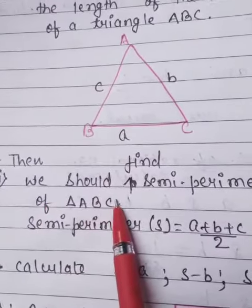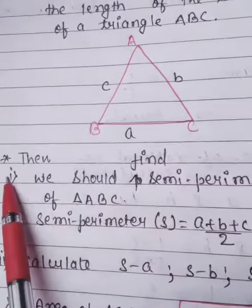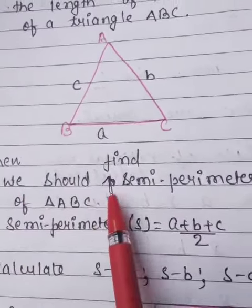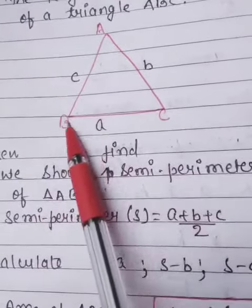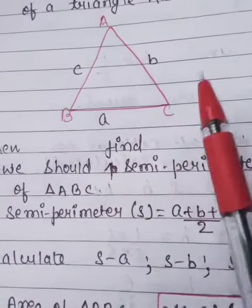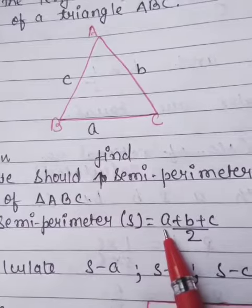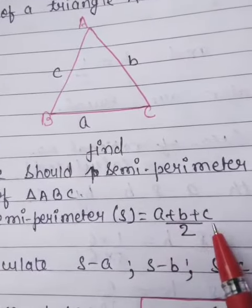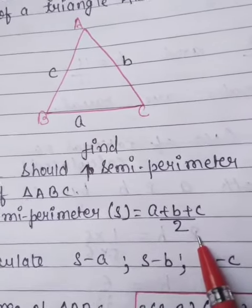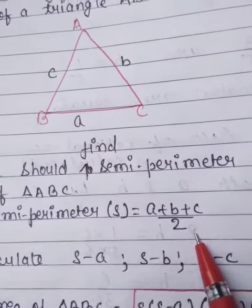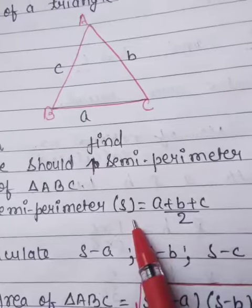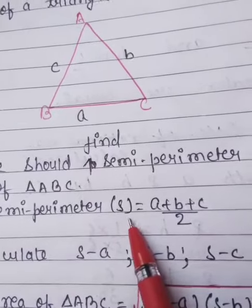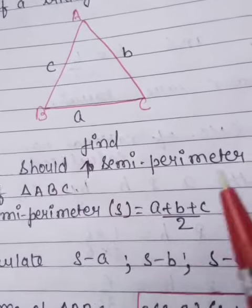Step by step, what we should do I've mentioned here. First step, we should find semi-perimeter of the triangle. Semi-perimeter is calculated by applying A plus B plus C divided by 2. Because we know that half of the perimeter is called the semi-perimeter. We use S to denote the semi-perimeter.